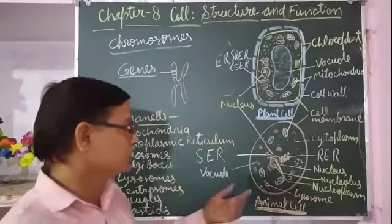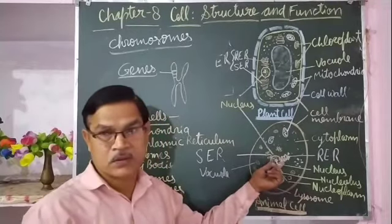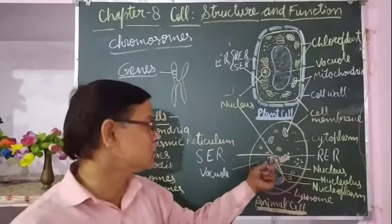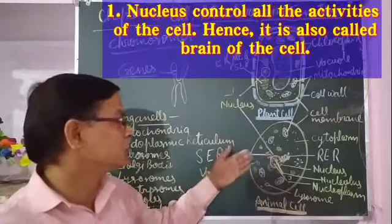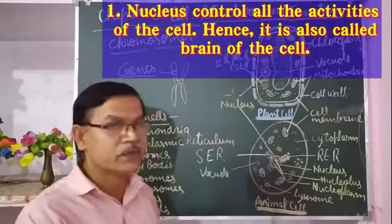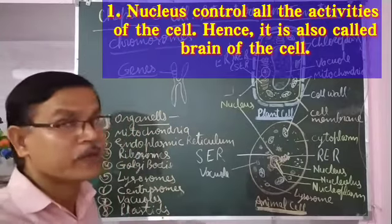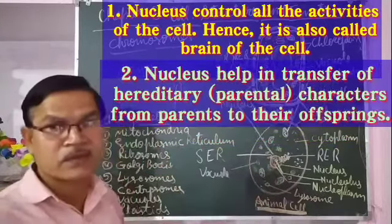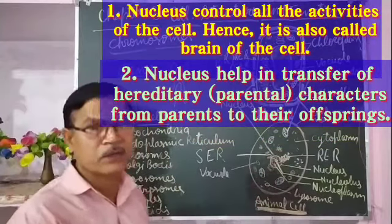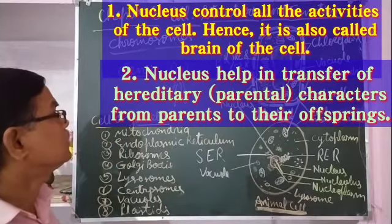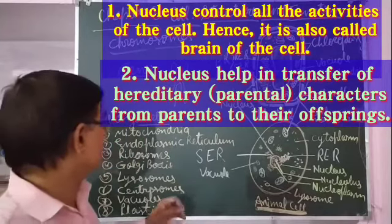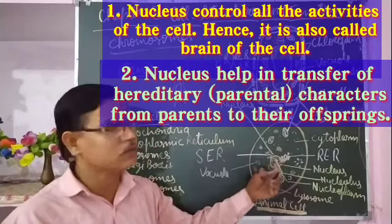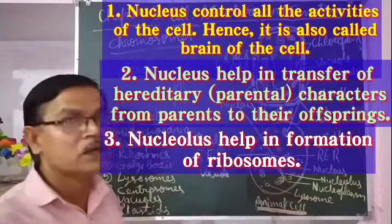The function of nucleus is that it controls all the activities of the cell — whatever activities take place inside the cell are controlled by the nucleus. So one function is to control the activities of the cell; that is why it is also called the control center or brain of the cell. Another function is that it helps in the transfer of hereditary characters from parent to the young ones. Also, the nucleolus present in the nucleus helps in the formation of ribosomes.